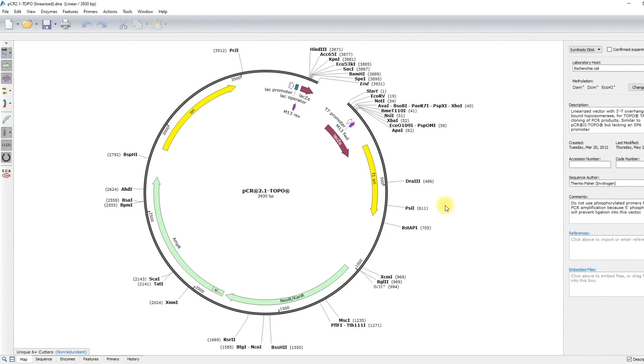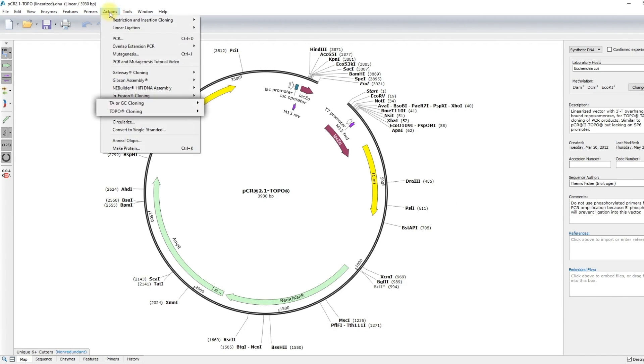Sequences of TA and topo-TA vectors are included in SnapGene and can be found by opening the Actions menu and selecting TA or topo-TA cloning.